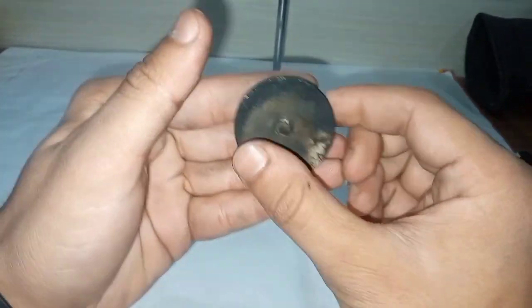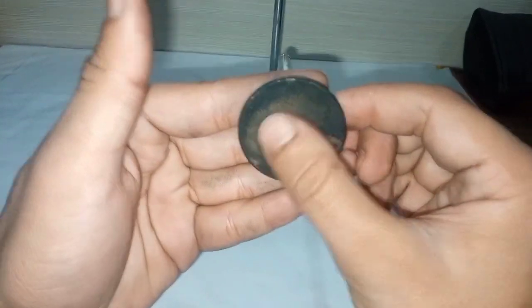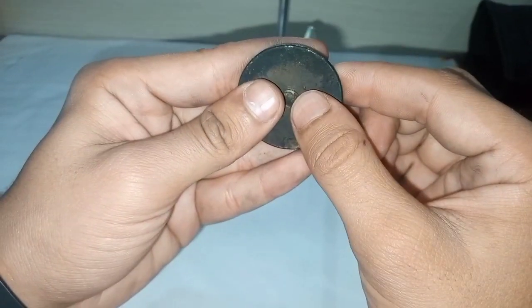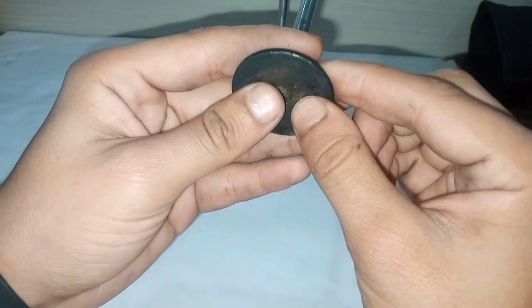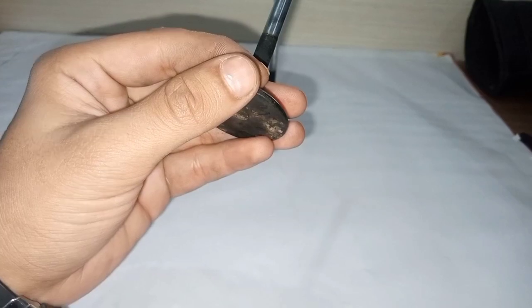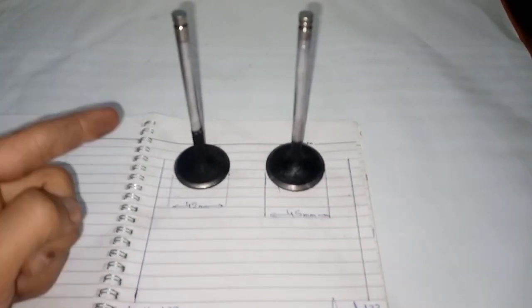Then we have this area, which is known as the combustion head of the valve. These were the major areas or parts of the valve. Now I will tell you about the major difference between the exhaust valve and intake valve.